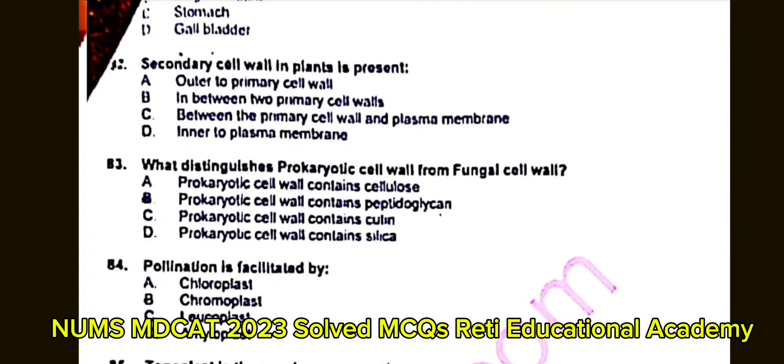Question number 83: What distinguishes prokaryotic cell wall from fungal cell wall? A. Prokaryotic cell wall contains cellulose. B. Prokaryotic cell wall contains peptidoglycan. C. Prokaryotic cell wall contains chitin. D. Prokaryotic cell wall contains silica. The correct answer is B: Prokaryotic cell wall contains peptidoglycan.